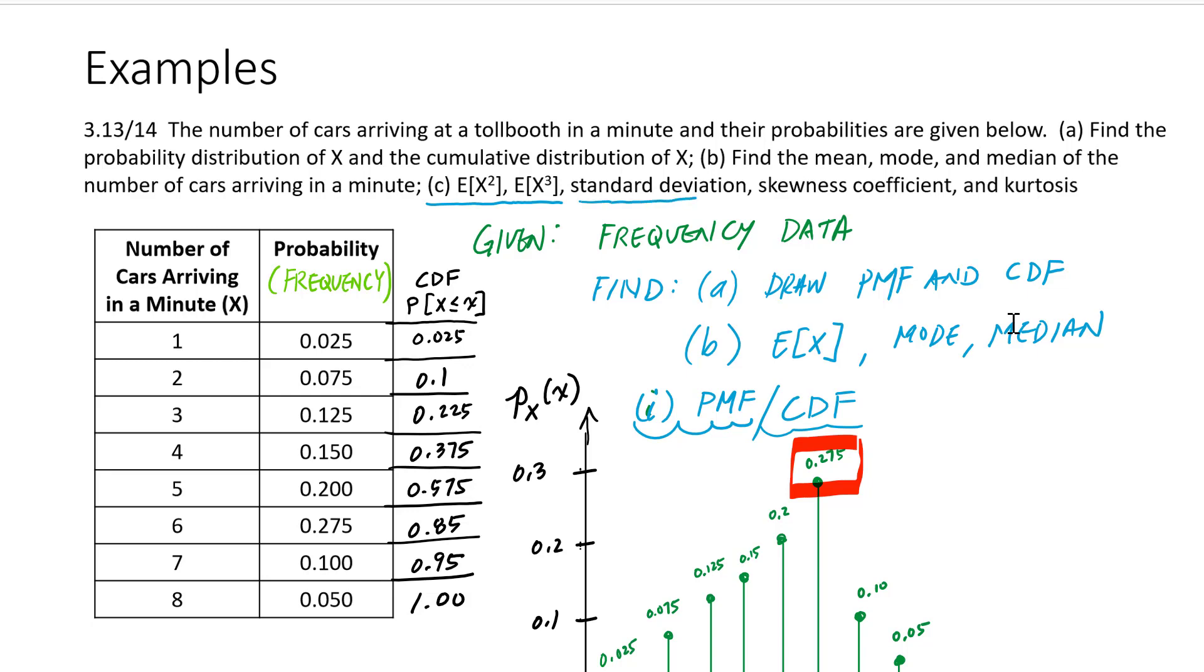Then we want to consider moments about the mean, which is going to be expressed in standard deviation, the skewness coefficient, and kurtosis. And the standard deviation, skewness coefficient, and kurtosis gives us a measure of the dispersion of the data.